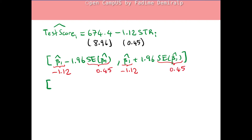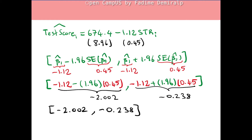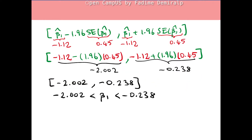Then we will have negative 1.12 minus 1.96 times 0.45 as the left-hand point of the interval, and the right-hand point will be negative 1.12 plus 1.96 times 0.45. The left-hand point is negative 2.002 and the right-hand point is negative 0.238. We are 95% confident that the true value of beta 1 is between negative 2.002 and negative 0.238.